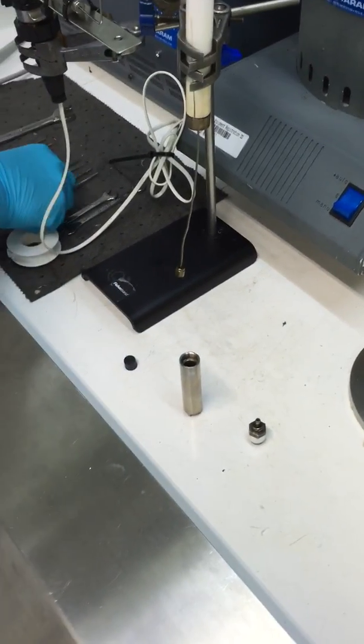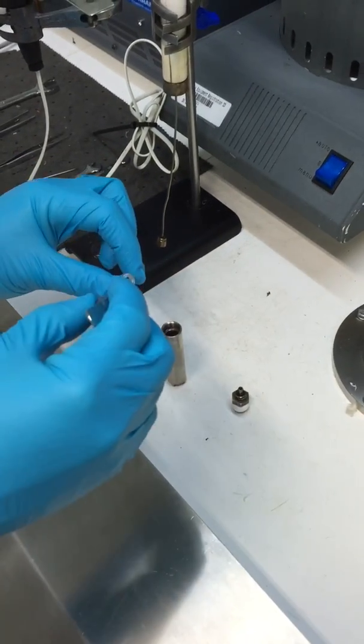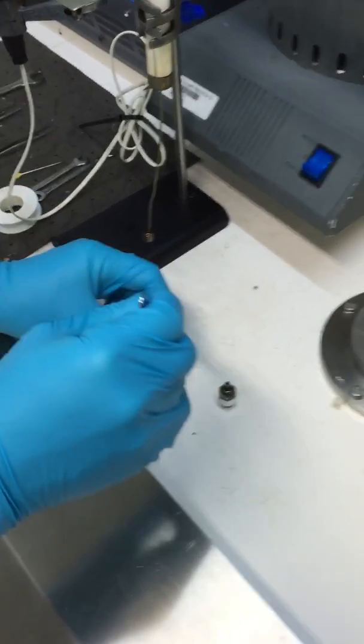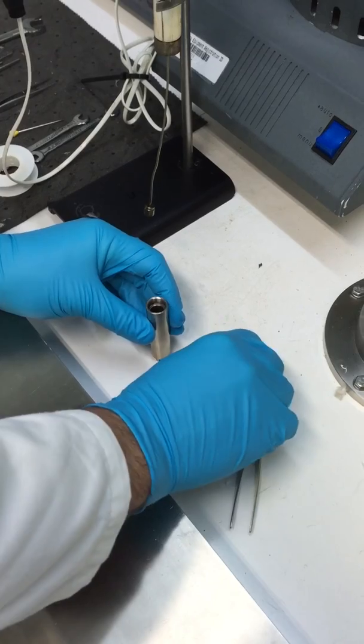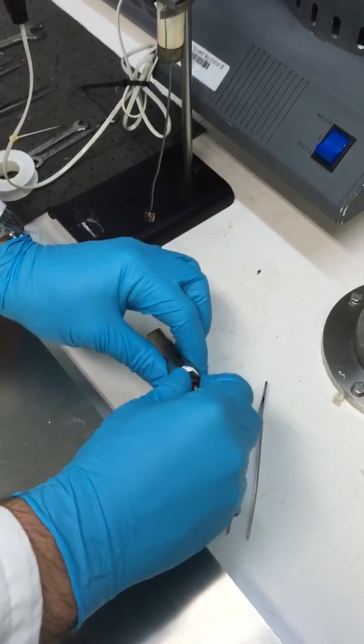We place our sample into the cell. Generally we use tweezers to drop it in so we don't spill any sample. We then connect the nut to the top with finger tightness to start with.